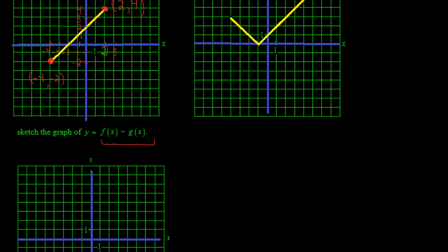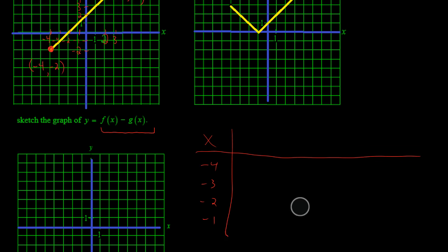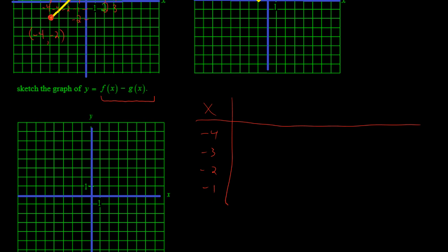So my x values, which I know, but my x values range from negative 4 to positive 2. So negative 4, negative 3, negative 2, negative 1, and then I go 0, 1, and 2.